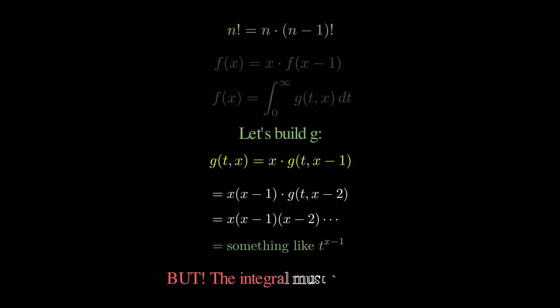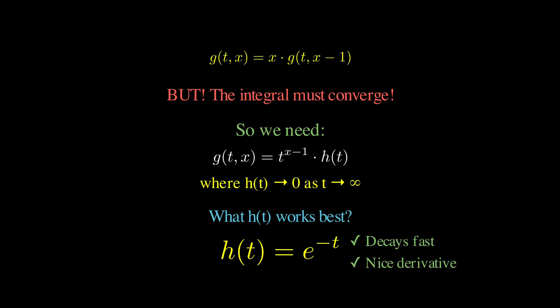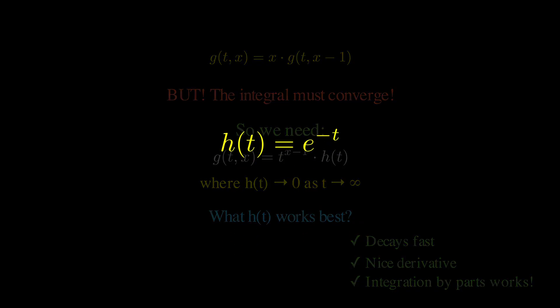But wait, for our integral to converge, we need h of t to decay to 0 as t goes to infinity. The exponential e to the negative t is perfect because it decays fast enough, and when we differentiate it, we get negative e to the negative t which works beautifully with integration by parts.